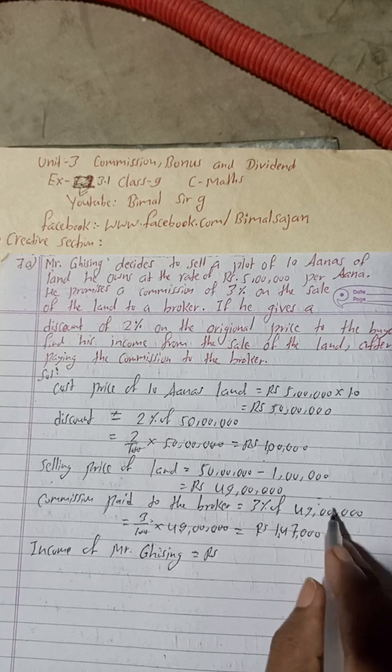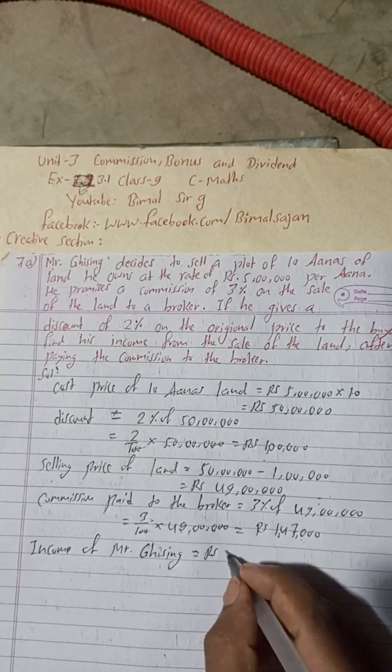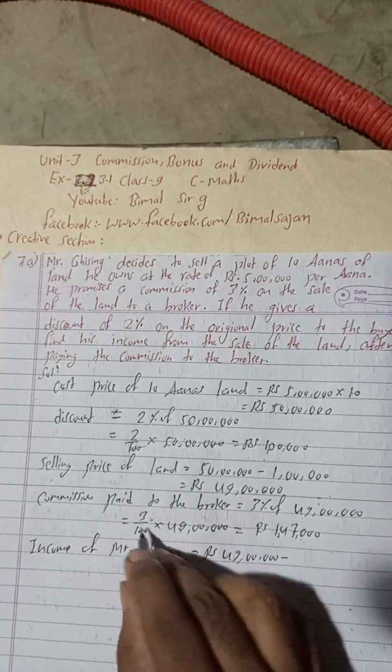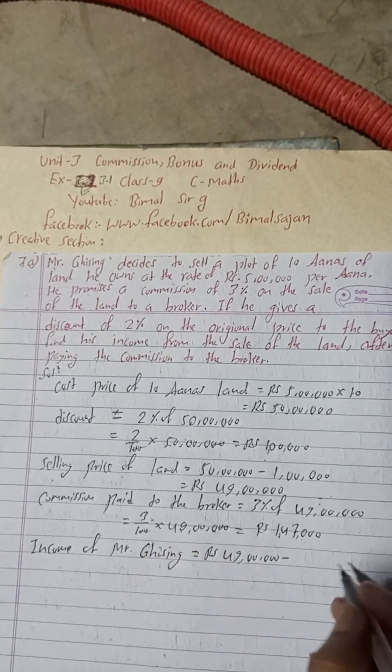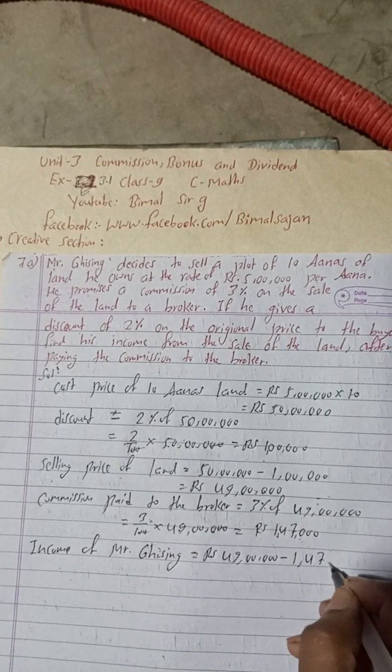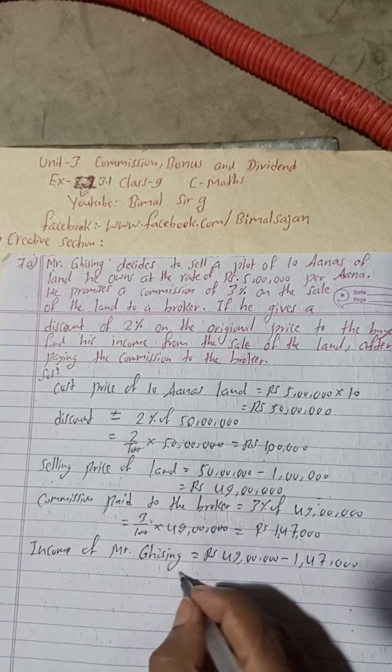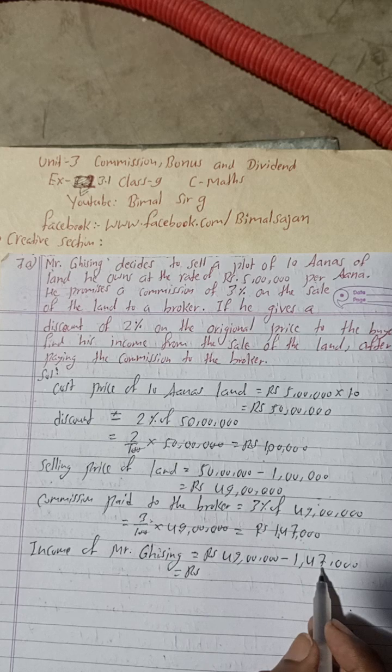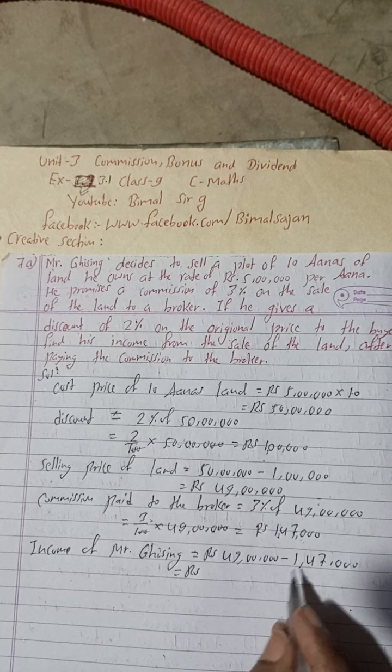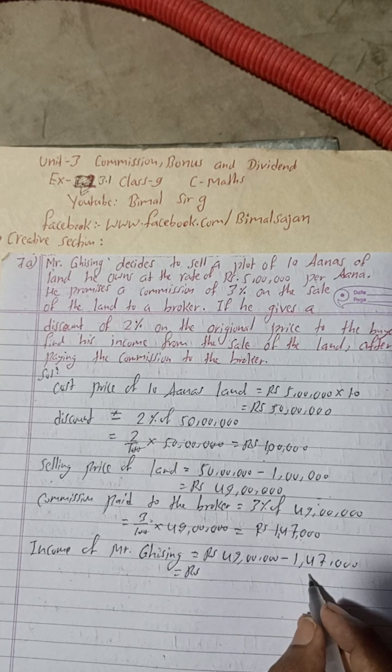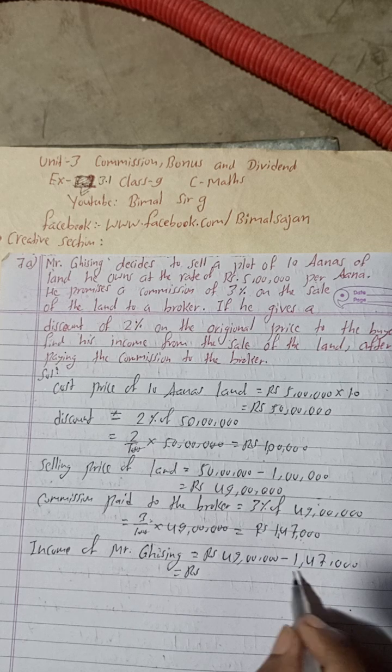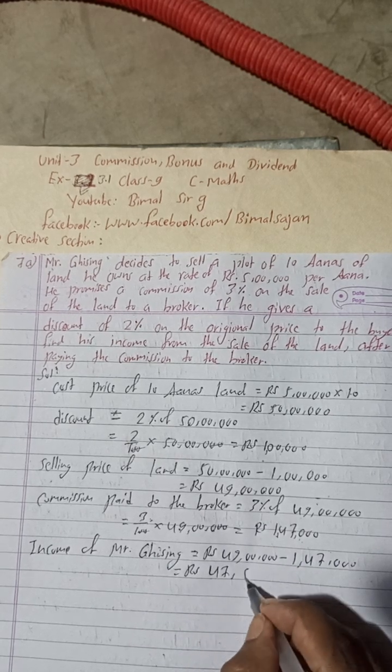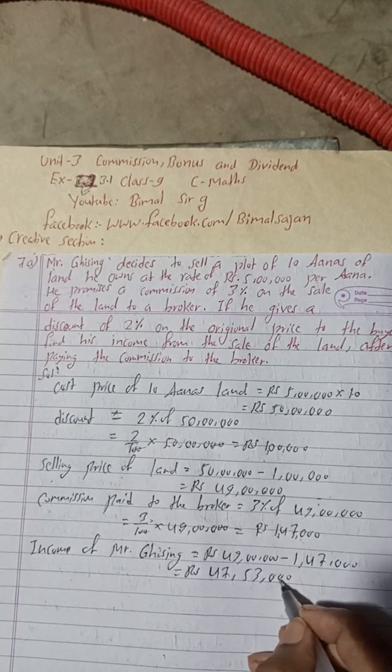Rs, this is the 49 lakh, okay, minus this. This is the commission, he has to pay from this, okay. So 1,47,000. So this will be here Rs 49 lakh minus 1,47,000 will be here. This will be now 1 lakh, so 49 lakh, means this will be here Rs 47,53,000. Okay.